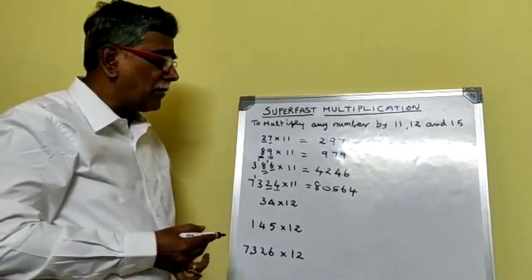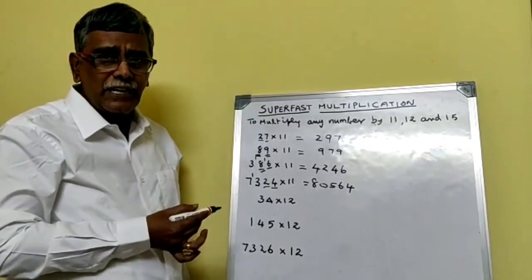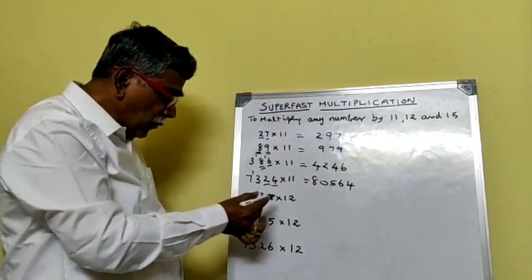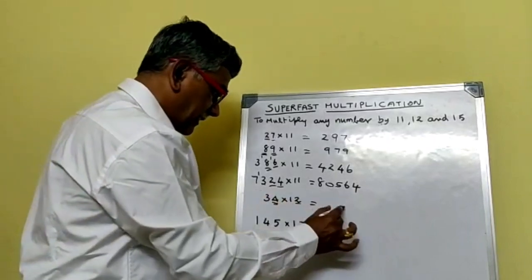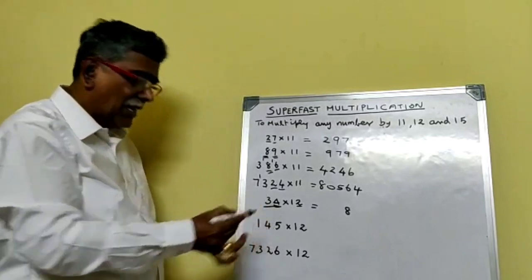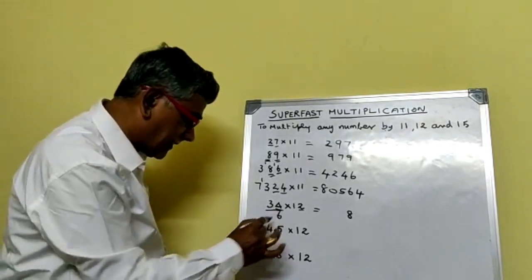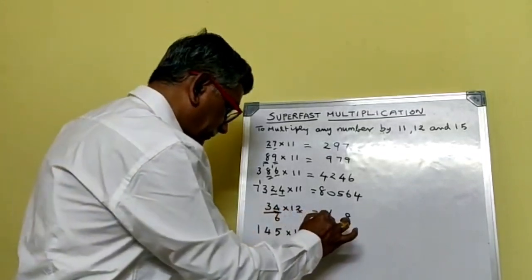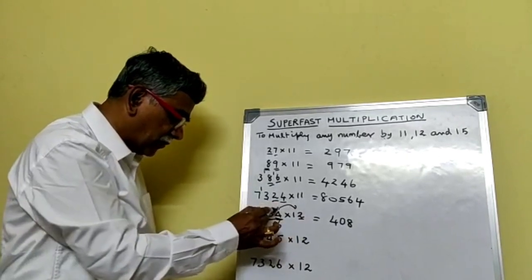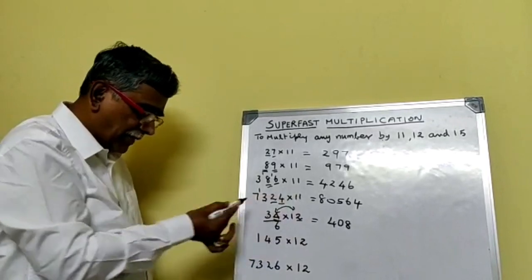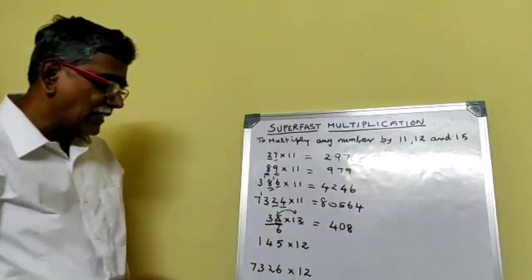Now let us see how to multiply a number by 12. Note that 5 into 2 is 10. We will use 5 here — that is, division by 5. To find the unit digit, take the unit digit of the product of the two unit digits: 2 into 4 is 8. Then divide the number 34 by 5 — quotient is 6, and 34 plus 6 is 40. So 34 into 12 equals 408.